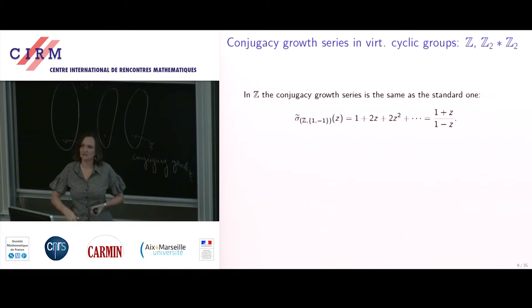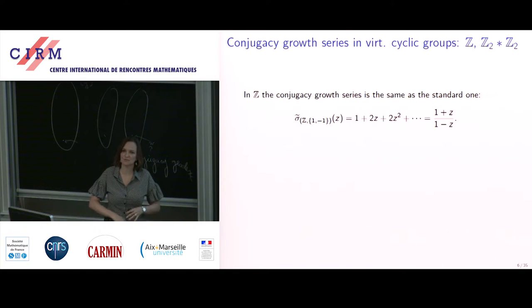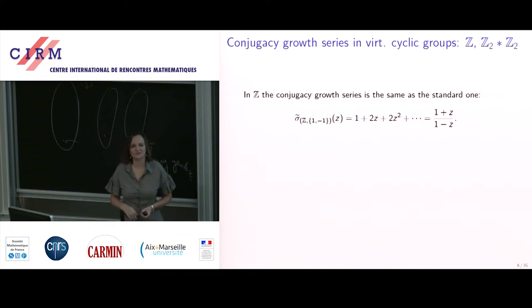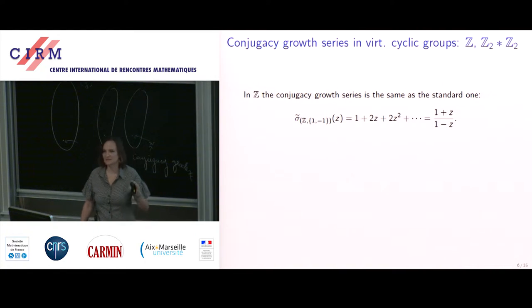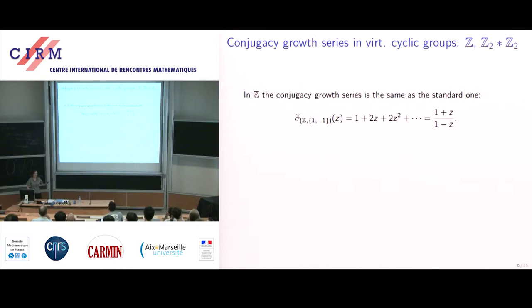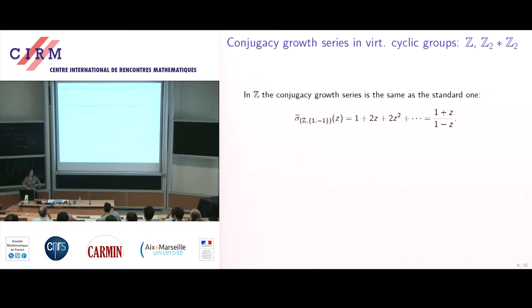As a warm-up, let me give a couple of examples. In the easiest hyperbolic group, ℤ, or any abelian group, conjugacy classes are the same as elements, so the conjugacy growth series is exactly the standard growth series — and it is of course rational. In a dihedral group or free product of two cyclics, conjugates are easy to determine: elements like ab are conjugate to ba, so you should only count one of them.